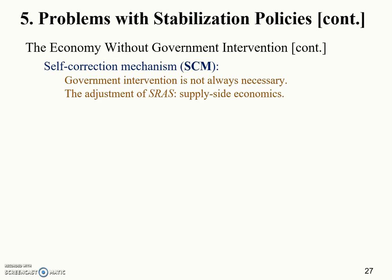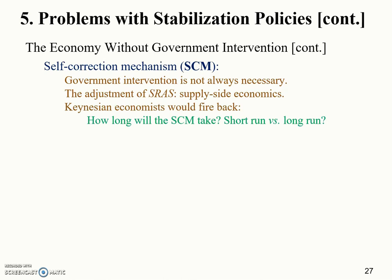Supply-side economists focus more on the supply side — the SRAS — when analyzing business cycles, rather than aggregate demand as Keynesian economists do. Keynesian economists fire back against the SCM: they question how long the SCM will take. If it takes only a few weeks or a month or two, that might be acceptable — but if it takes six months, or even several years, then it becomes a serious problem.